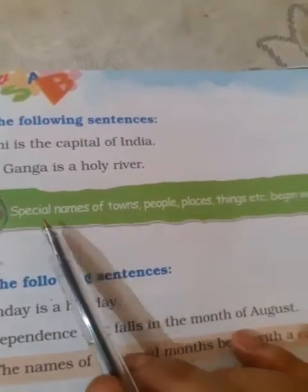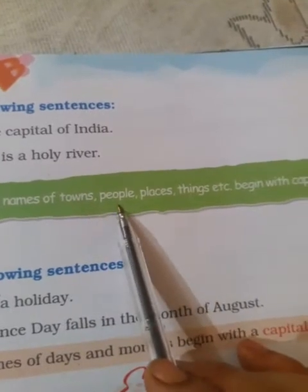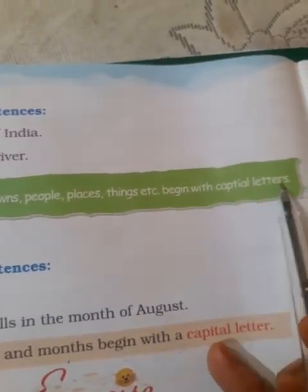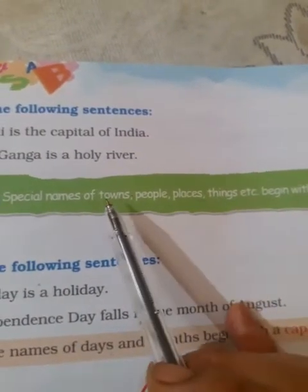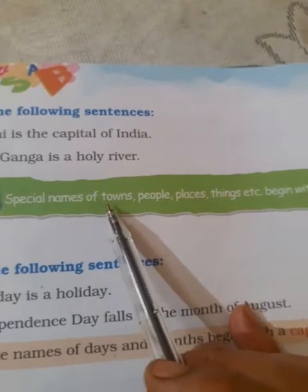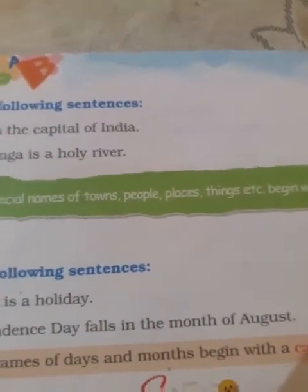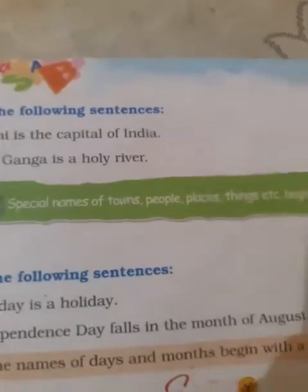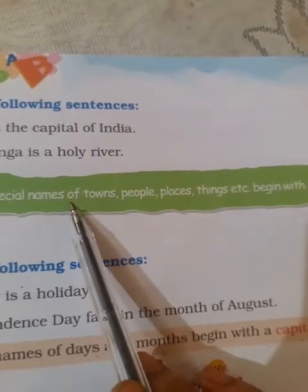The 3rd point: special names of towns, people, places, things, etc. begin with capital letters. For example, if I write Dhanbad, we cannot write D in a small letter. Every time we will write D in a capital letter and the rest in small letters. If we write the Ganga, a holy river, G will be capital. That is a special name of a river.